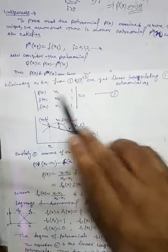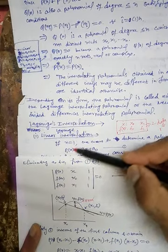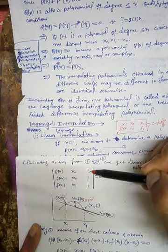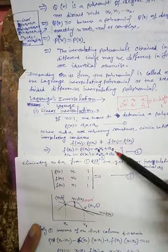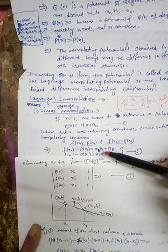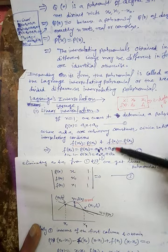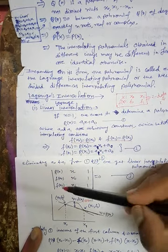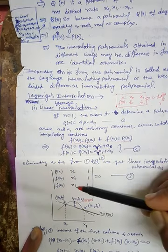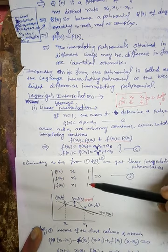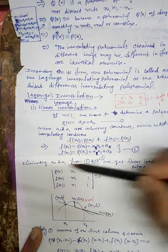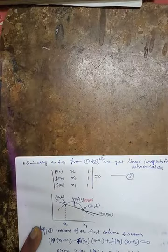From equations 1 and 2, if we eliminate a0 and a1, we obtain a determinant. The first row comes from equation 1, with the coefficient of a1 and coefficient of a0. Similarly, from the second and third equations, we write the coefficients. In this determinant there is no a0 and a1, so they are eliminated.